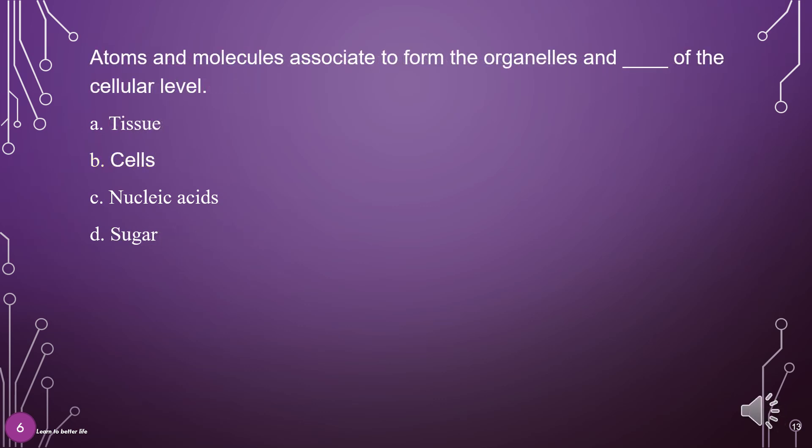Atoms and molecules associate to form the organelles and what of the cellular level? A. Tissue, B. Cells, C. Nucleic acids, D. Sugar. The answer is B: Cells.